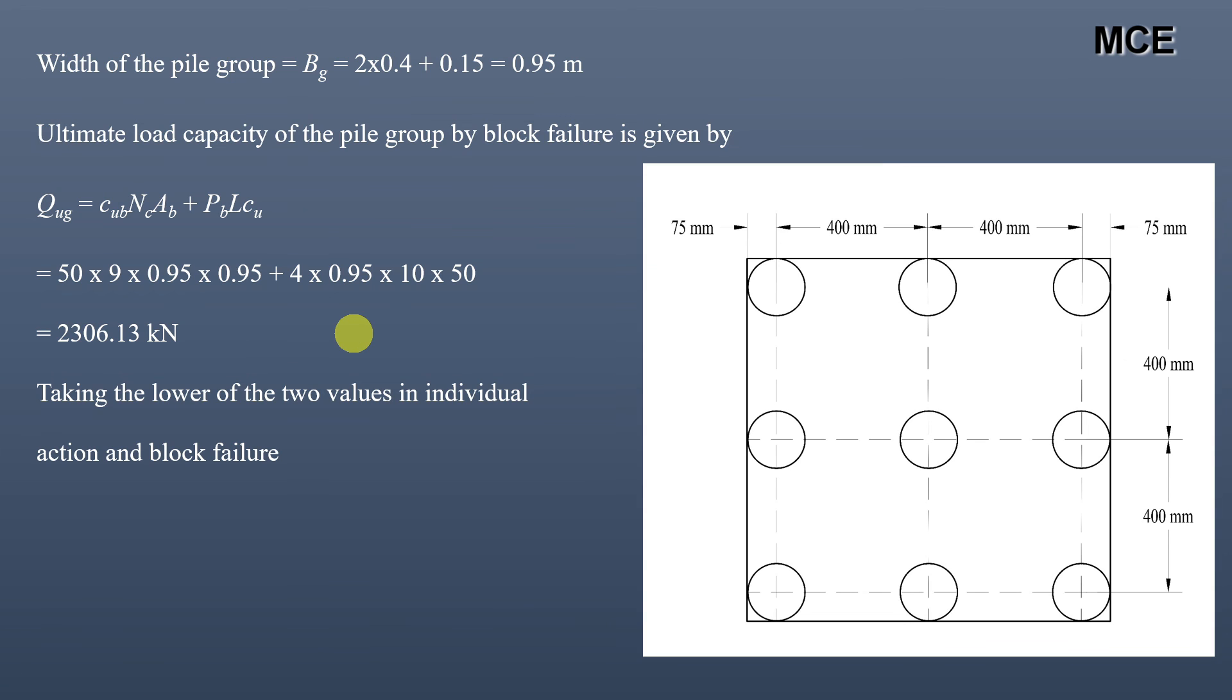We have to take the lower of the two values, that is in the individual action and the block failure, so ultimate load capacity will be equal to 1980 kN on the basis of individual action, which is smaller than the block action. So allowable load capacity will be equal to ultimate load capacity divided by factor of safety, so it will be 1980 / 2.5 which is 792 kN. This will be the allowable load capacity of this pile group.